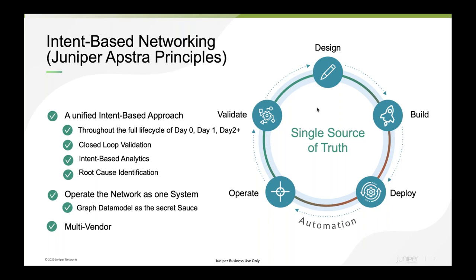In line with how Gartner describes intent-based networking, Juniper acquired a company called Apstra in January 2021. The Juniper Apstra Fabric Solution provides full automation for day zero, day one, and day two in your data center using a unique intent-based approach where architects can focus on the 'what' question, and the 'how' — how to deliver that intent — is handled by the software application framework.